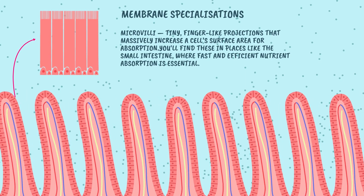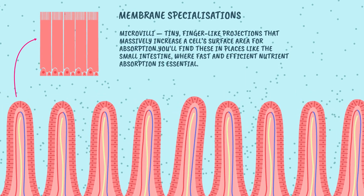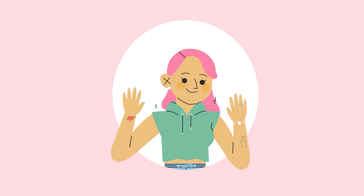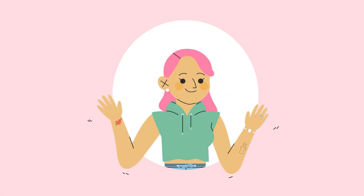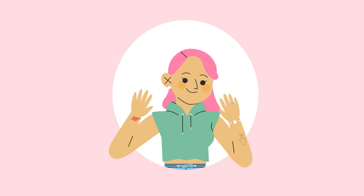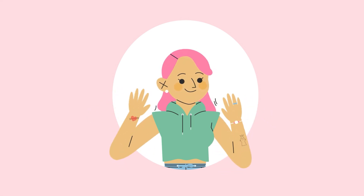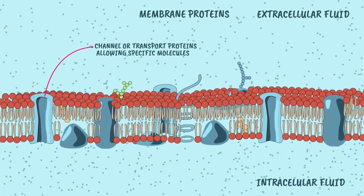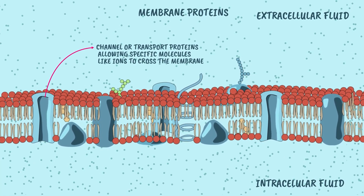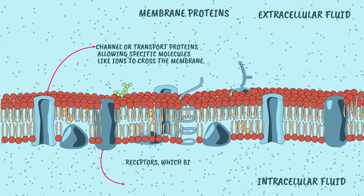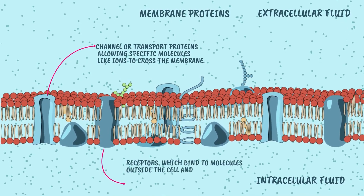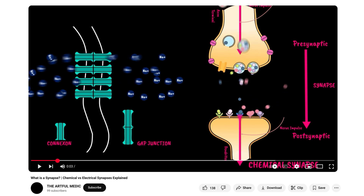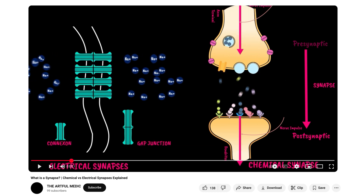And that's it for today's video on the plasma cell membrane. If you found this breakdown helpful, make sure to subscribe so you don't miss more animation-based explanations. Next up, we'll be exploring membrane proteins in even more detail. And if you're curious about how your brain sends signals at the cellular level, check out my earlier video on chemical vs. electrical synapses — it's linked below. Thanks so much for watching. See you next time!